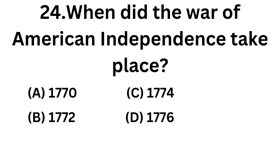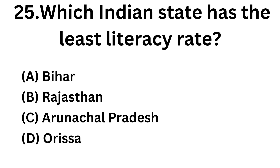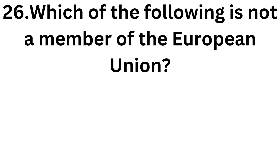The twenty-fourth question: when did the War of American Independence take place? Options are 1774, 1775, 1776, 1777. The answer is 1776. Now the twenty-fifth question: which Indian state has the least literacy rate? Options are: Bihar, Rajasthan, Arunachal Pradesh. The answer is Bihar.